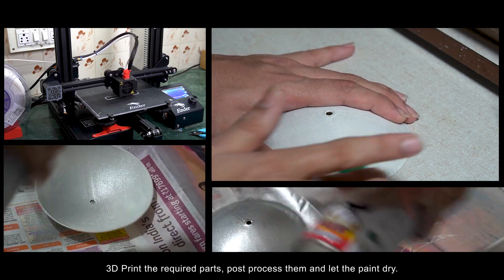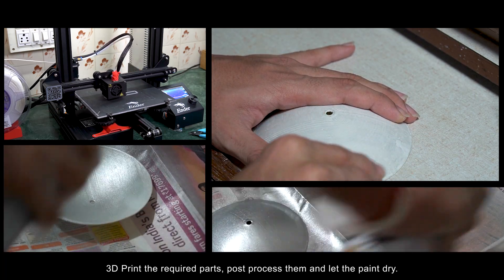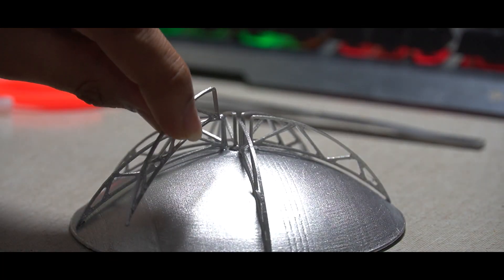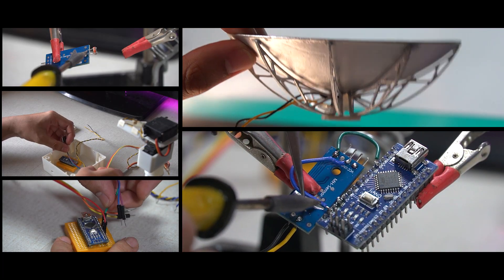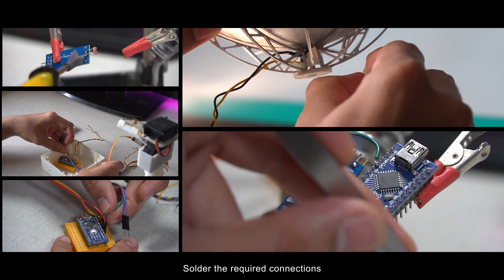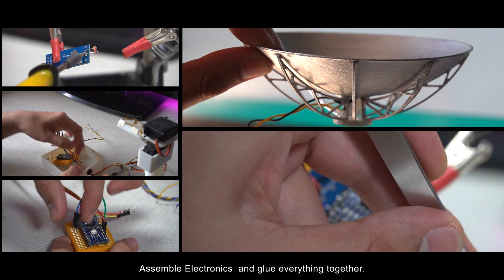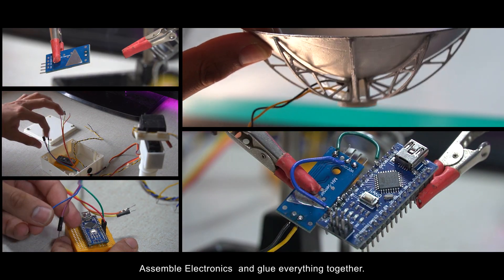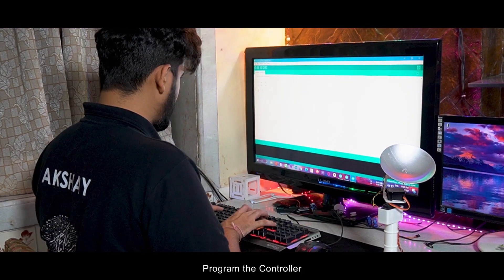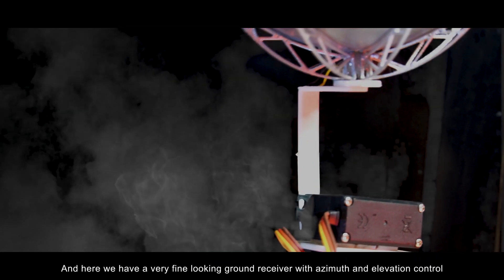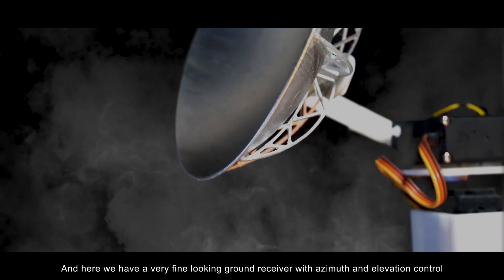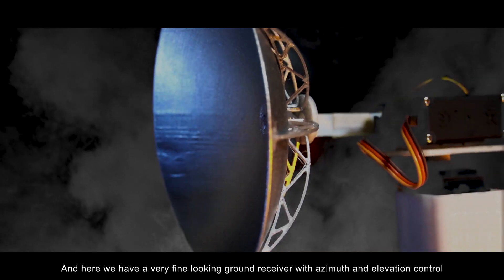3D print the required parts, post process them and let the paint dry. Glue the required parts, build the circuit, solder the required connections, assemble the electronics and glue everything together. Program the controller and here we have a very fine looking ground receiver with azimuth and elevation control.